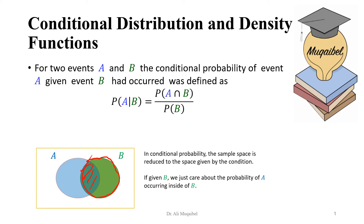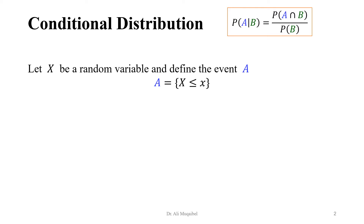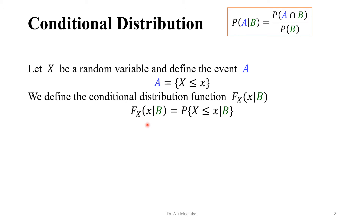We have covered this before and we will use this to extend the concept to random variables. We had conditional probability, which is something that we know, and now it's time to extend this to random variables. The conditional probability — we can think of X as a random variable, and it's defined to be the probability of X less than or equal to a given value. The reason we write event A in this format is because this is very much related to the CDF, to the conditional distribution. So we can think of capital F of X, the CDF, which is conditioned on B — it's just like the probability of X less than or equal to a given x. So now we have changed A to the following interval.